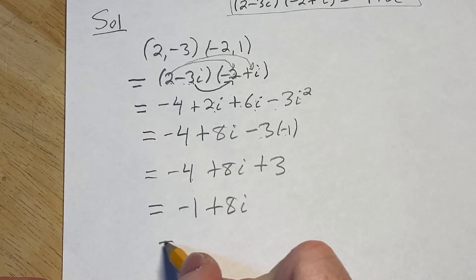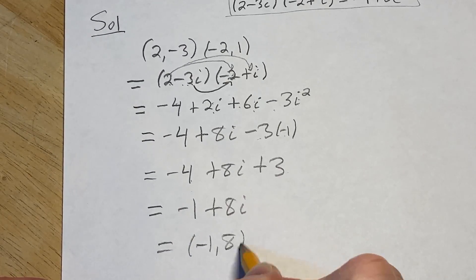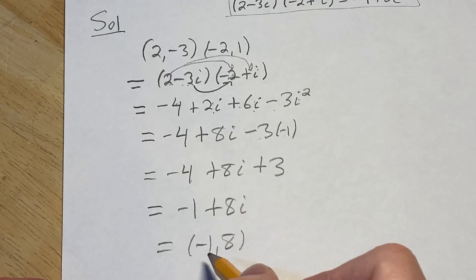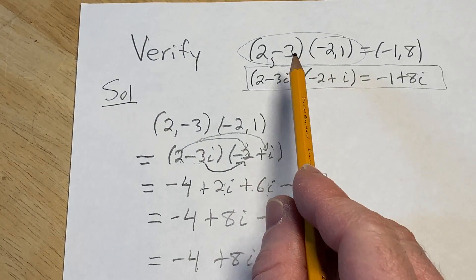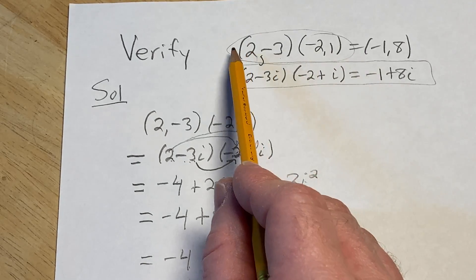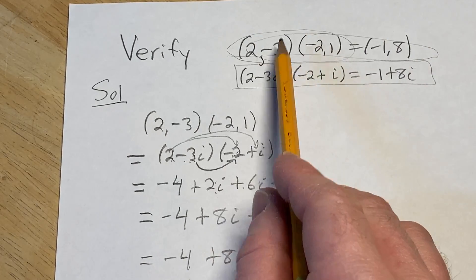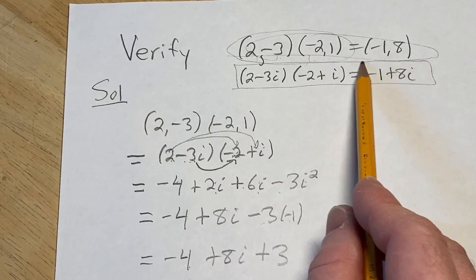Which is exactly the same as negative 1 comma 8, where you can think of every complex number in some sense as an ordered pair. So that's it, we've done what we were tasked to do, right? We had to verify this product of complex numbers when represented as ordered pairs.